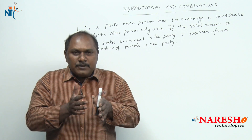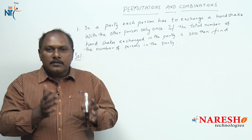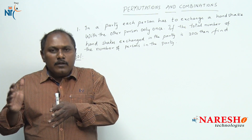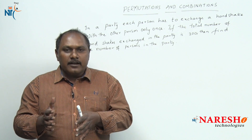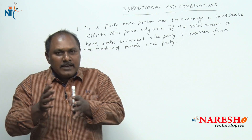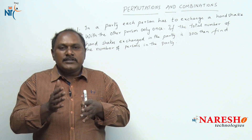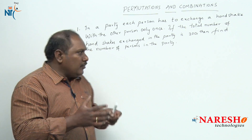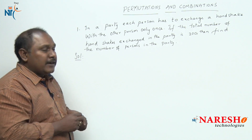So the first person exchanges handshakes with 49, the second person with 48, the third person with 47, and so on. The last person need not exchange any handshake because every other person has already given a handshake to that person. The last but one person will exchange a handshake with the last person, that is just one. Using this simple logic we can answer this question.